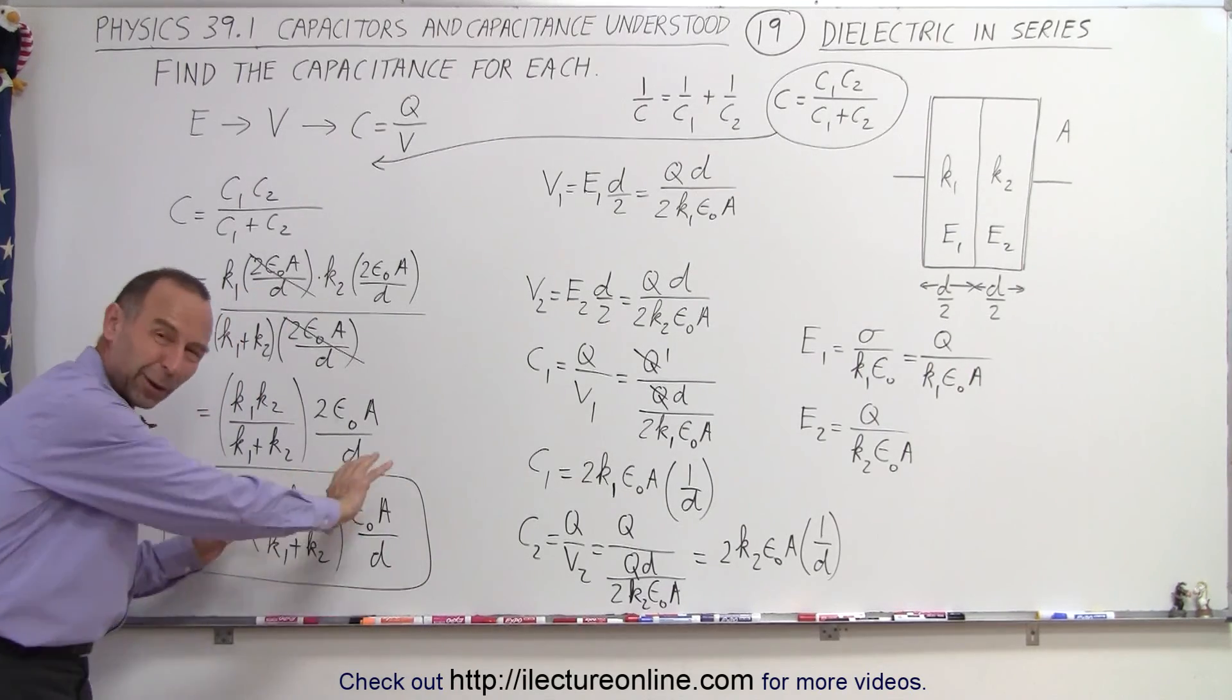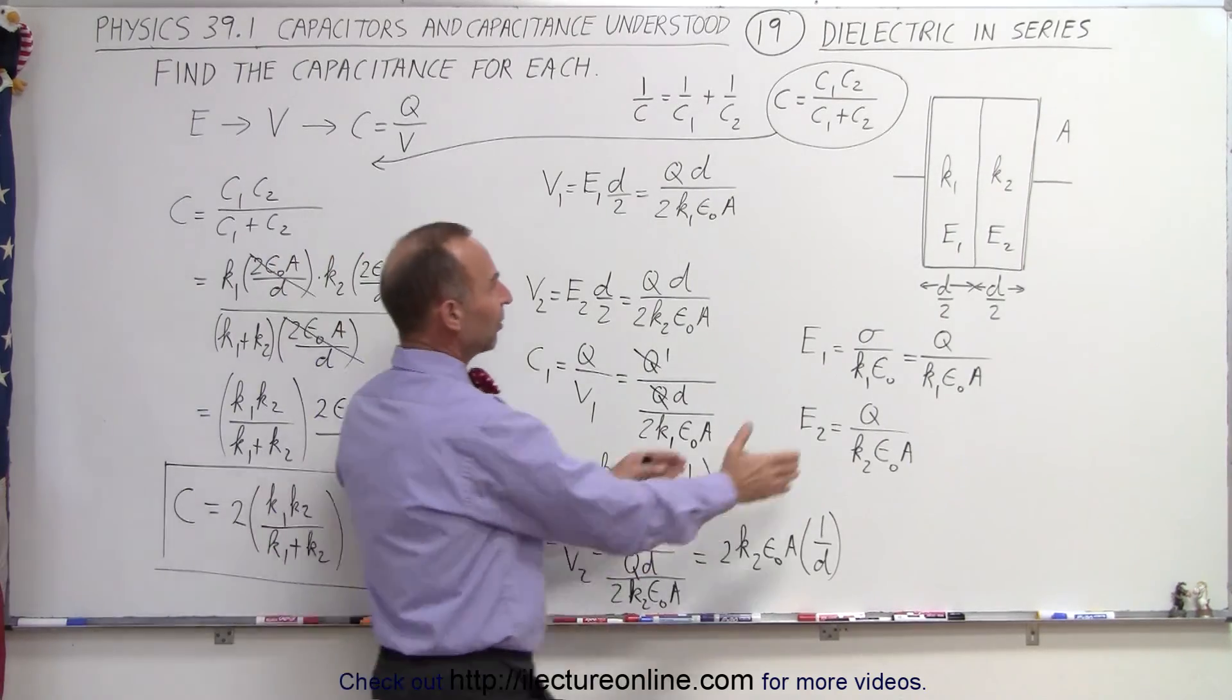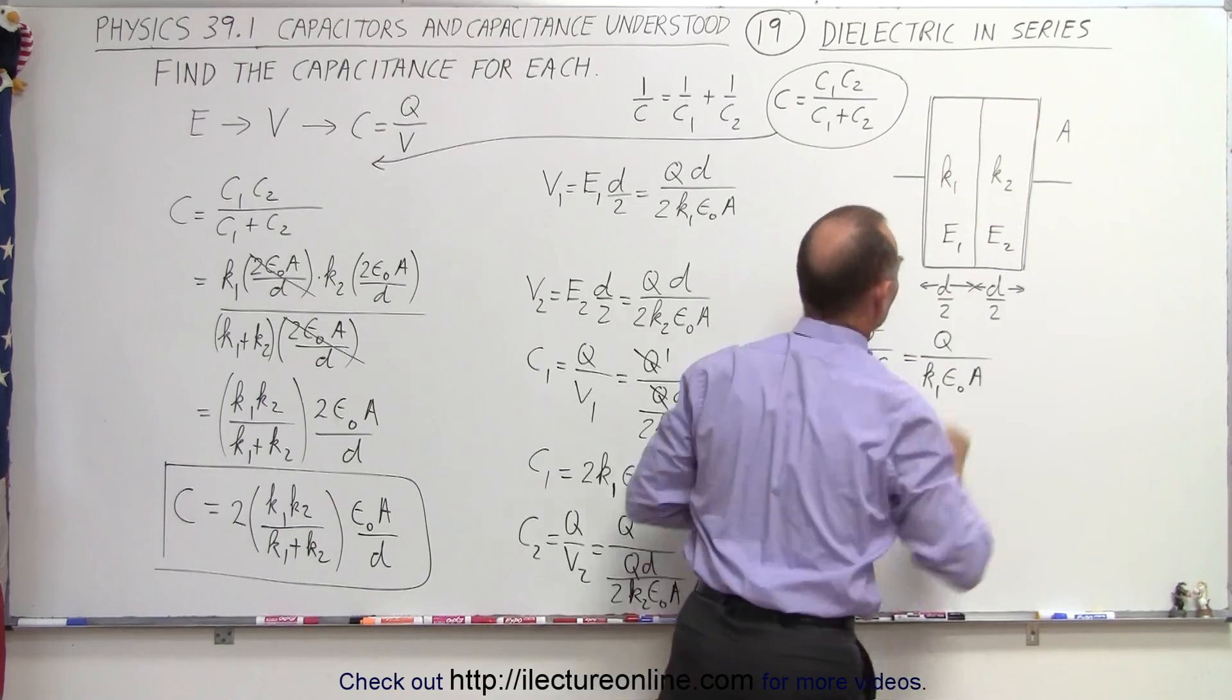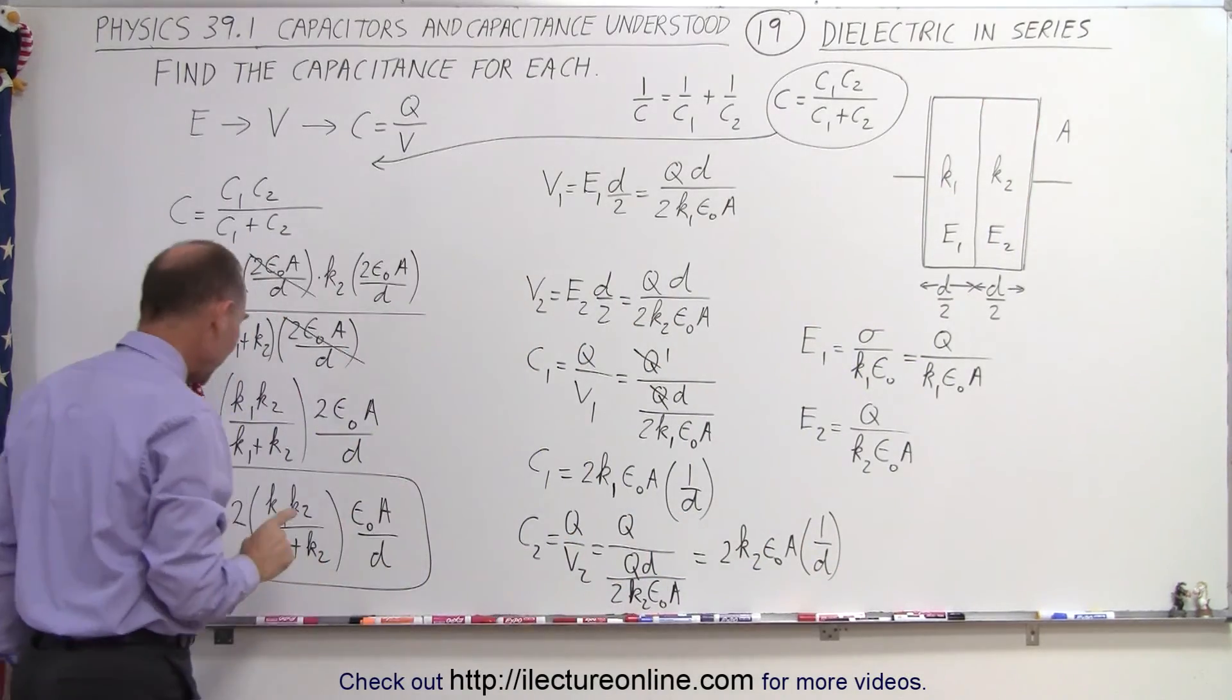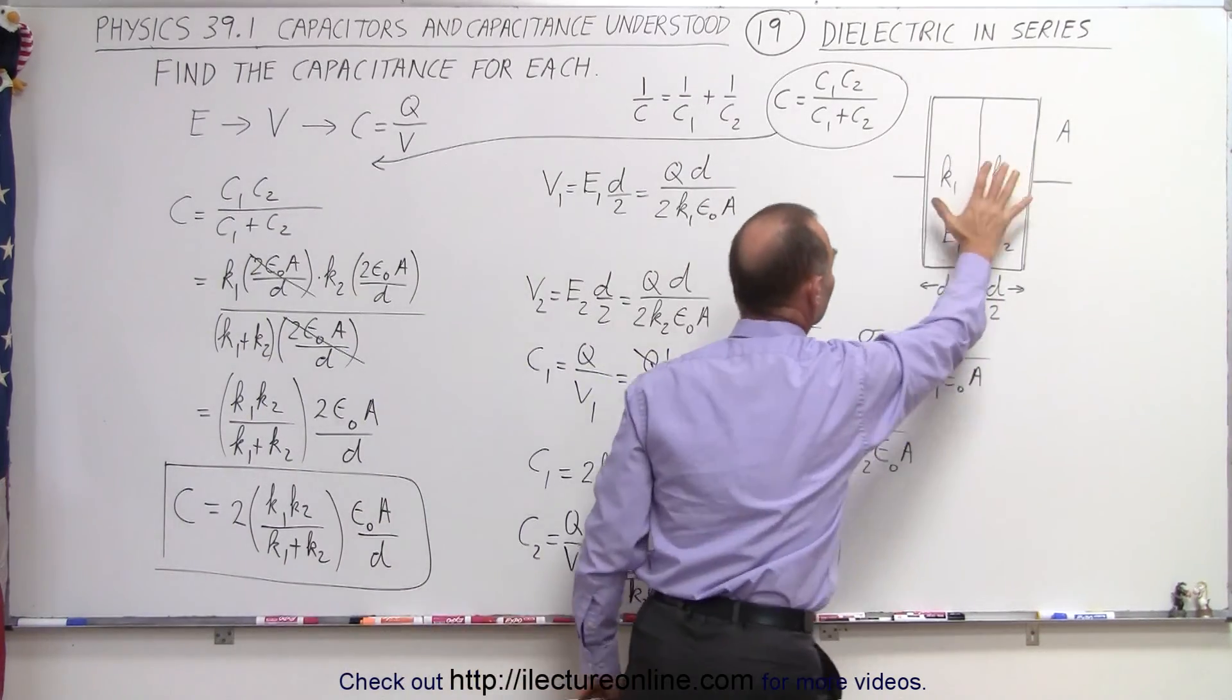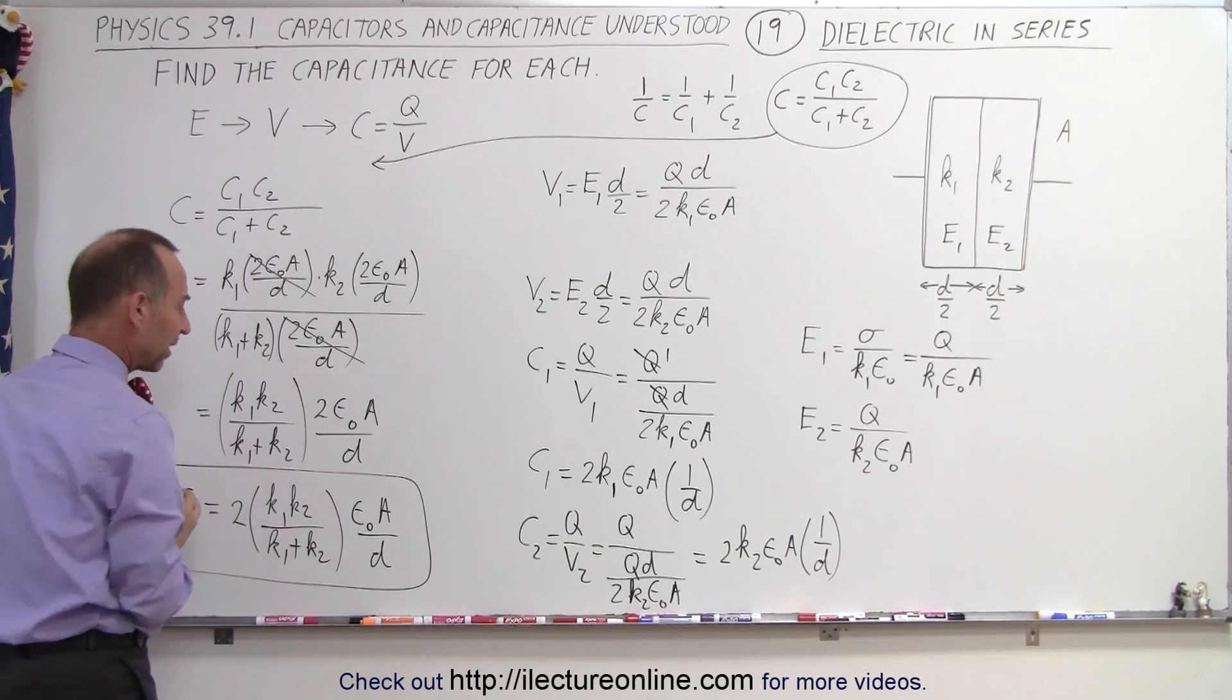Notice that this portion right here, that's why I wrote it separately like that, this portion right here would be the capacitance of this capacitor with a certain amount of charge on it if there was no dielectric at all. Since we have a dielectric, if there was only one dielectric covering the entire capacitor, call it k, then this whole thing would simply be replaced by just k.